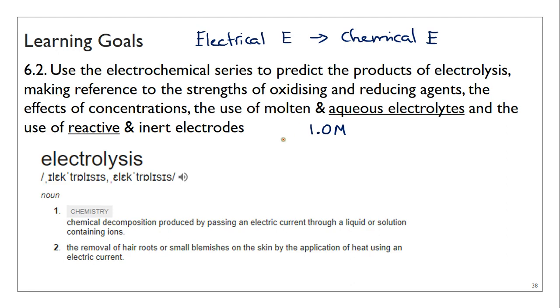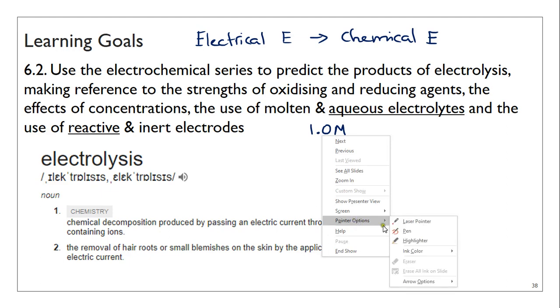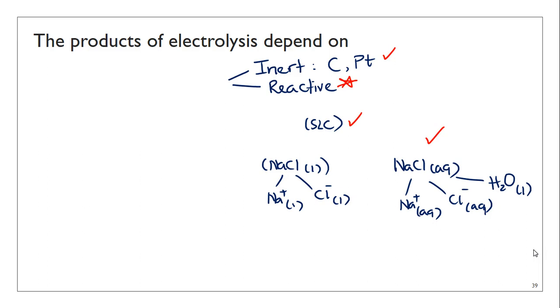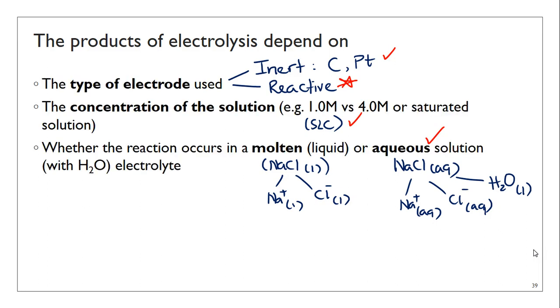We're still going to keep the condition to be SLC using aqueous electrolytes. The only difference between this video and the previous one is that instead of having the electrodes being inert, they are going to be reactive. This is a quick reminder of the three factors that may affect the products of electrolysis: type of electrodes, concentration of solution, and reaction electrolyte. The bit in star is what we're looking at for this video.